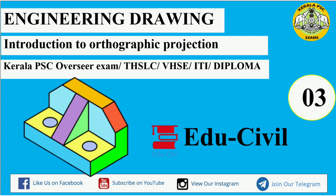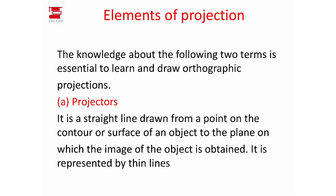We are going to talk about the elements of projection and orthographic projection. The projection is a straight line drawn from a point on the contour or surface of an object to the plane on which the image of the object is obtained.